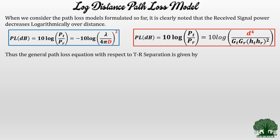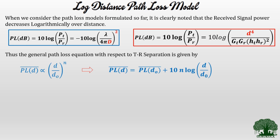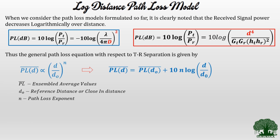The log distance path loss model uses a general path loss equation completely dependent on transmitter-receiver separation. The equation is generalized as: PL(d) is directly proportional to (d/d₀)ⁿ, where PL represents path loss, d is the actual distance between transmitter and receiver, d₀ is the reference or close-in distance, and n is the path loss exponent. This can be written as: PL(d) = PL(d₀) + 10·n·log(d/d₀).